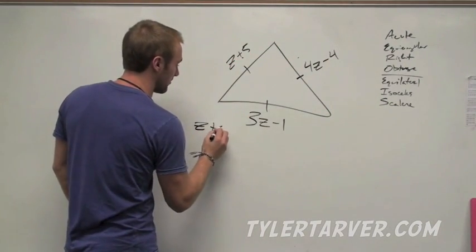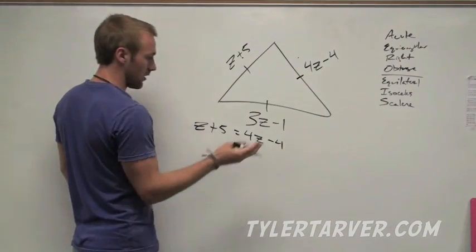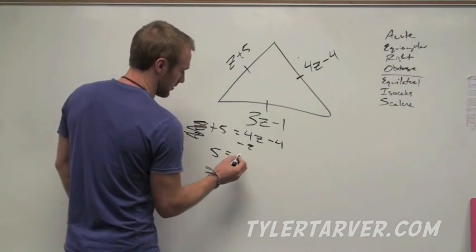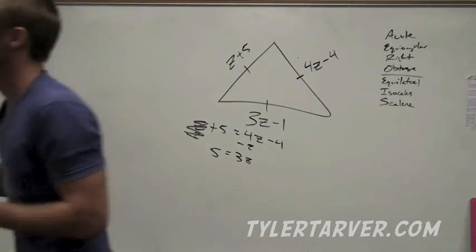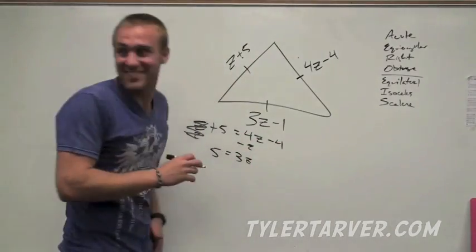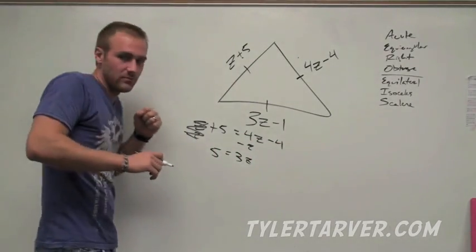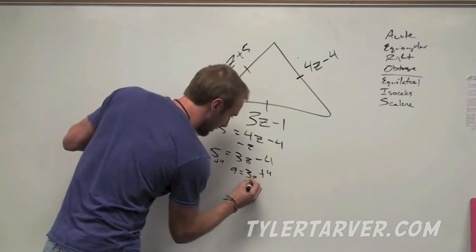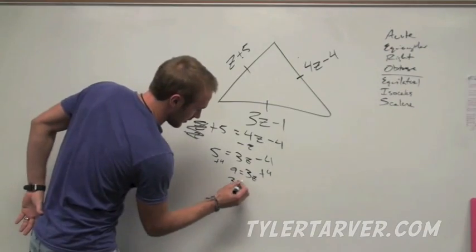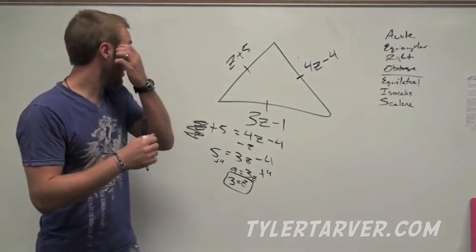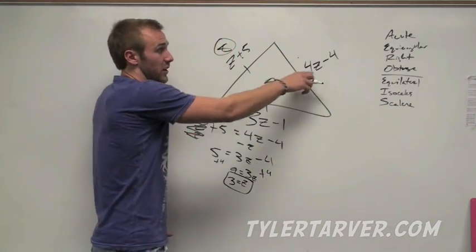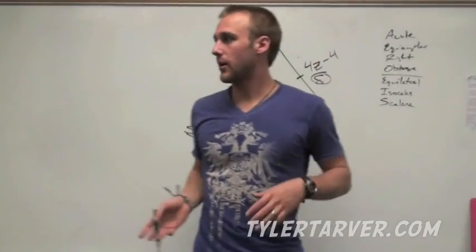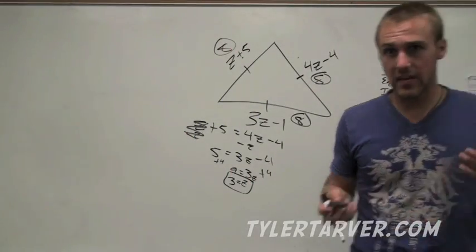Set z plus five equal to four z minus four. Subtract z from both sides: five equals three z minus four. Add four to both sides: nine equals three z. Divide by three: z equals three. Plug it in — three plus five is eight; four times three is twelve, minus four is eight; three times three is nine, minus one is eight. All the sides are equal — it worked out.